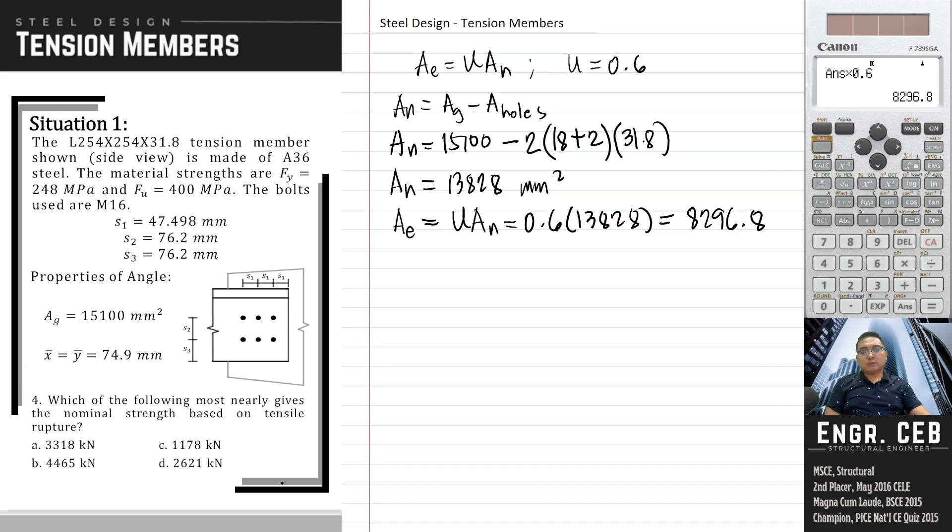Problem 4: Which of the following most nearly gives the nominal strength based on tensile rupture? So we can already solve for this one since we already have the effective net area. So the nominal strength for tensile rupture is F_U times A_E. So we just substitute our values.